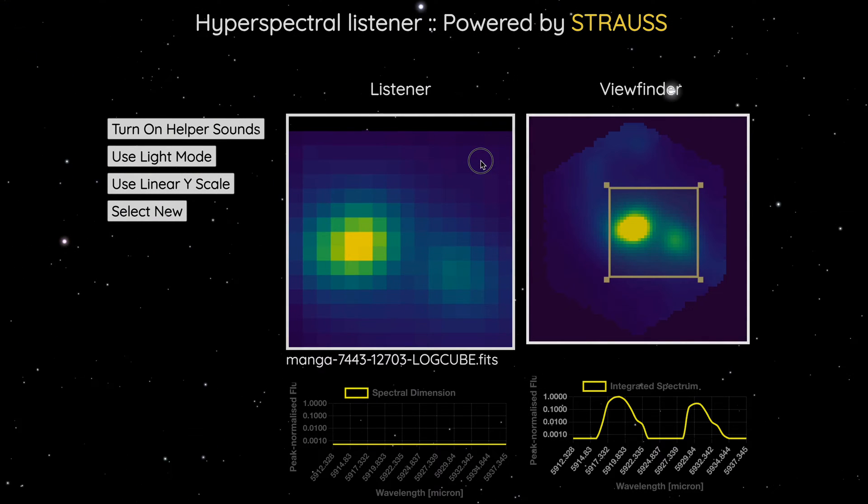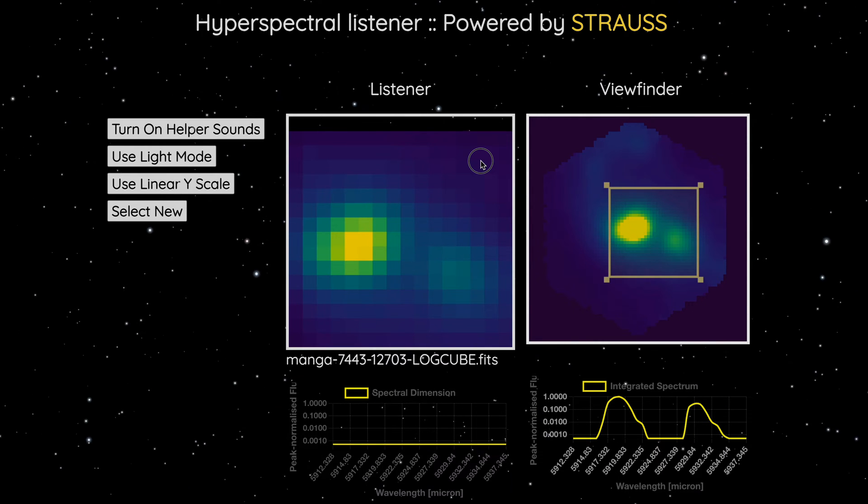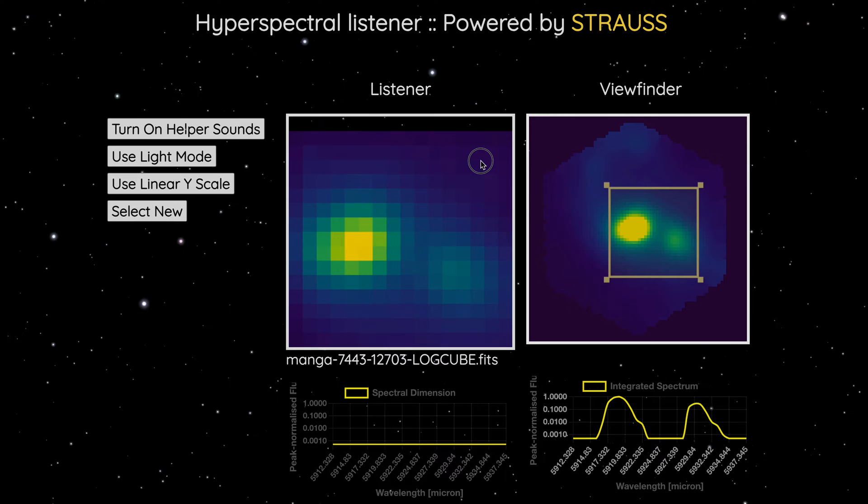Strauss can also power applications to explore data in interactive ways. Here, we use sound to perceive hyperspectral data, converting light frequencies directly to audible frequencies. This can tell us about the motion of gas in a galaxy.